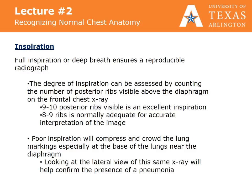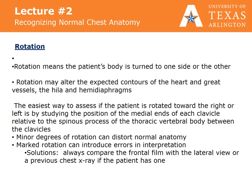Looking at the lateral view of the same x-ray will help confirm the presence of pneumonia. Rotation means the patient's body is turned to one side or the other. Rotation may alter the expected contours of the heart and great vessels, the hila, and the hemidiaphragm. Minor degrees of rotation can distort normal anatomy, and marked rotation can introduce errors in interpretation. To evaluate if a patient is rotated, look at the clavicles and the spinous process. The medial ends of the clavicles are anterior structures; the spinous process is a posterior structure. If the spinous process appears equidistant from the medial ends of each clavicle, the patient is not rotated. If the spinous process appears closer to the medial end of the left clavicle, the patient is rotated to the right. If closer to the medial end of the right clavicle, the patient is rotated to their left.